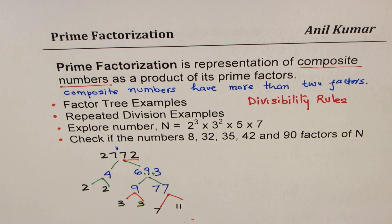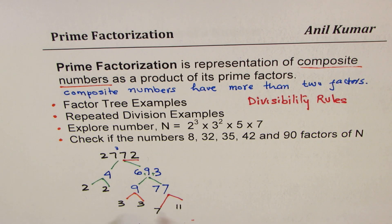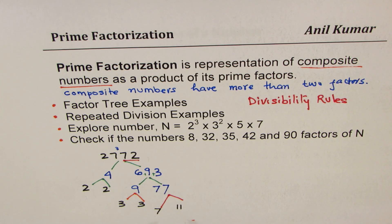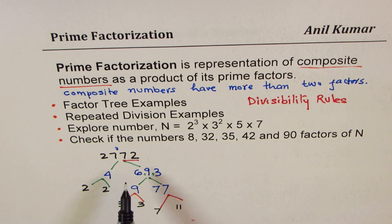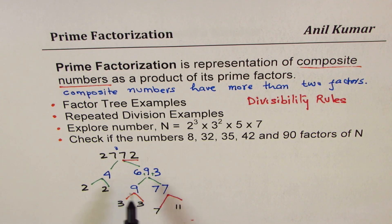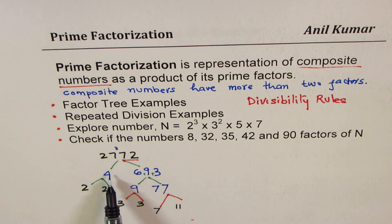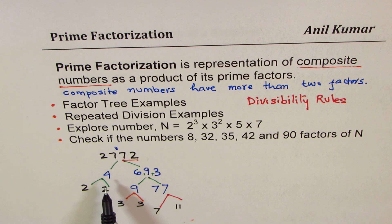We could get all the prime factors at the end — that is expected. If there is any composite factor, you can continue the process. One important thing to notice is that we could follow any pattern. I divided by 4, but I could have divided by 9, by 2, or by 6 to begin with. Order does not matter.